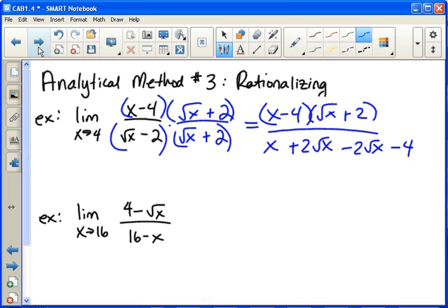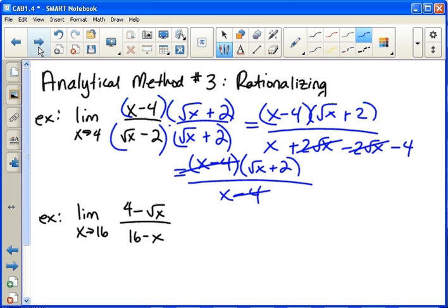That's the whole point of the conjugate is to get those middle terms to cancel out. So I probably won't even write them on the next example, because I know they're going to cancel out. So I just end up with x minus four on the bottom, which is perfect, because then I cancel out the x minus fours. Now I can plug the four into the square root of x plus two. And my answer is four.